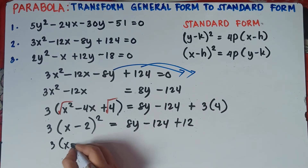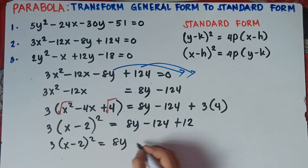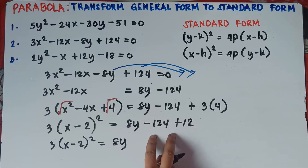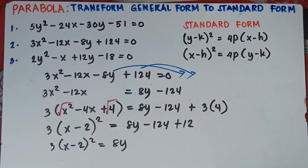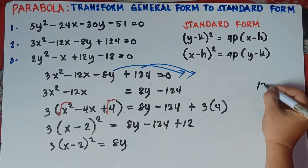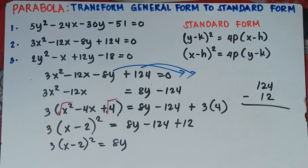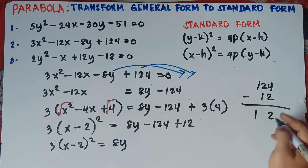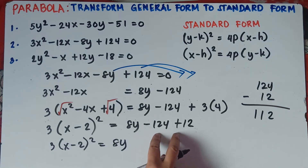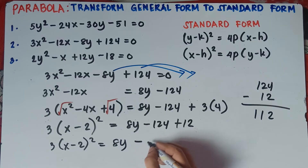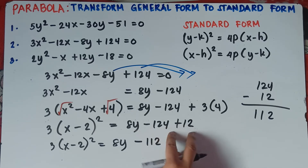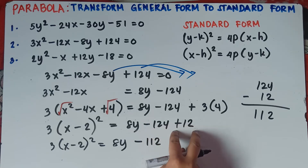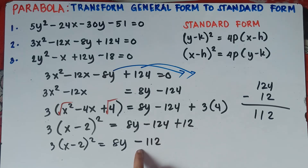So copy: 3(x - 2)² = 8y - 124 + 12. Since the signs of -124 and +12 are not the same, subtract and copy the sign of the larger number. 124 - 12 = 112, and since 124 is larger and negative, the result is -112. So we get 3(x - 2)² = 8y - 112.